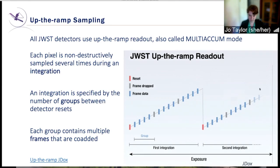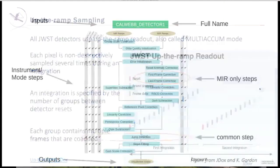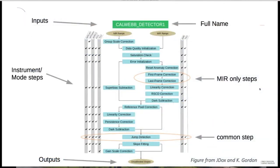This is a workflow of how the Detector 1 pipeline proceeds depending on mode and instrument. Each of the columns corresponds to a particular mode or instrument, and the check mark shows which step is applied for that mode. Some steps are applied based on the wavelength regime of the data, and some are applied across the board — for instance, jump detection.